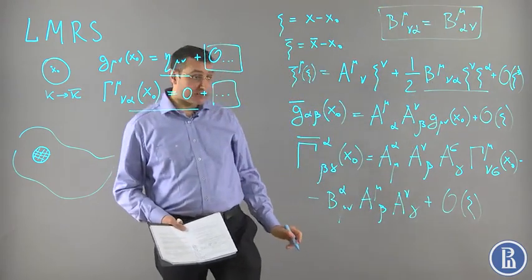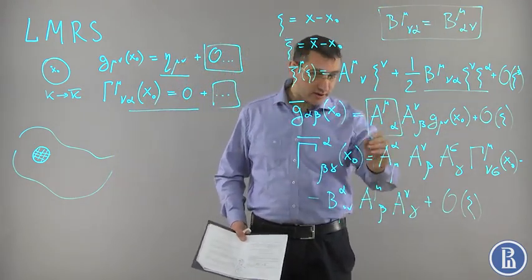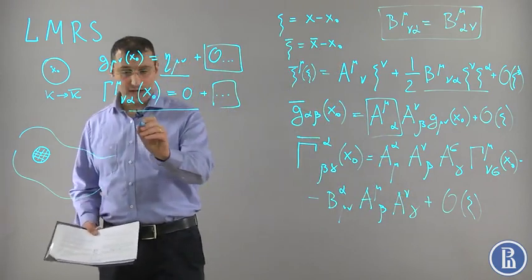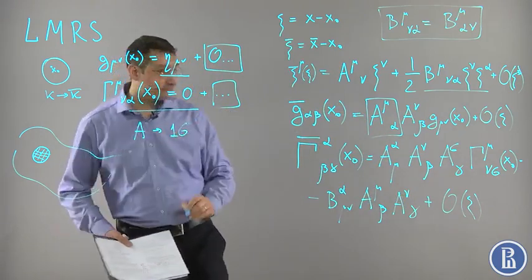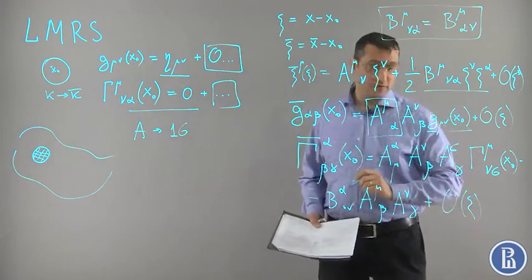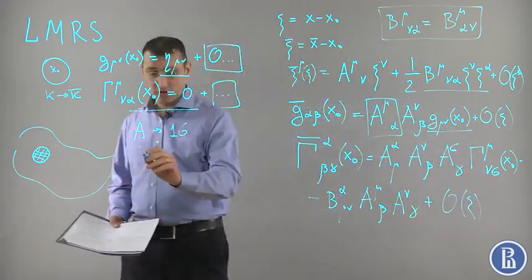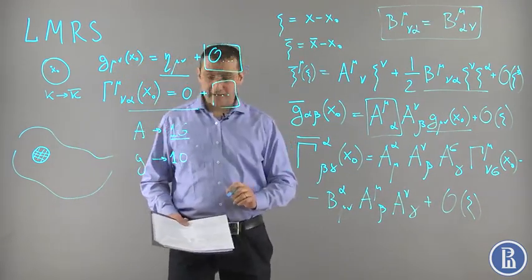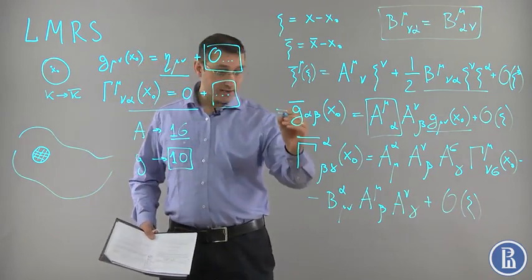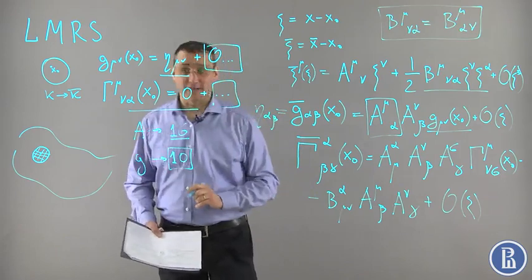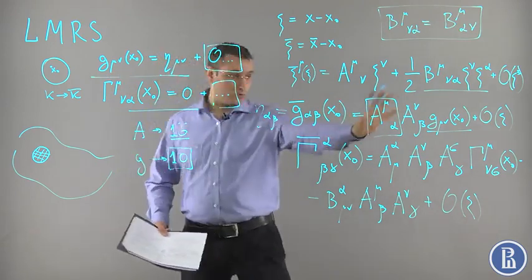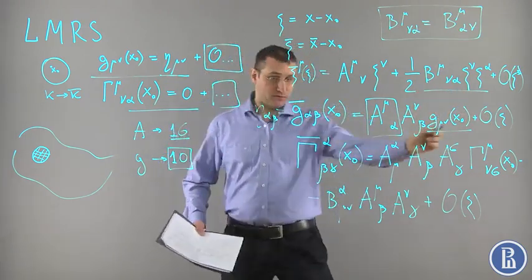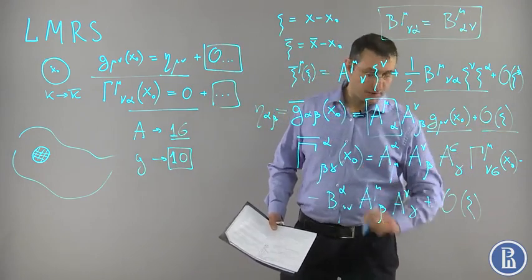A is a 4×4 matrix and so has 16 components. The metric g is symmetric as a 4×4 matrix, so it has 10 independent components. Using these 16 parameters of A, we can fix the 10 components of the metric to equal η_αβ — that's exactly what is stated. So we transform the original reference system where the metric was a complicated function to one where it equals η_αβ, up to corrections.